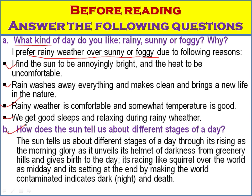Question B: How does the sun tell us about different stages of the day? The sun tells us about different stages of the day through its rising as the morning glory. As it rises in the east, we call it morning. As it unveils its helmet of darkness from the greenery hills and gives birth to the day, racing like a squirrel over the hills at midday, and setting at the end, making the world contaminated and dark, indicating night or death.